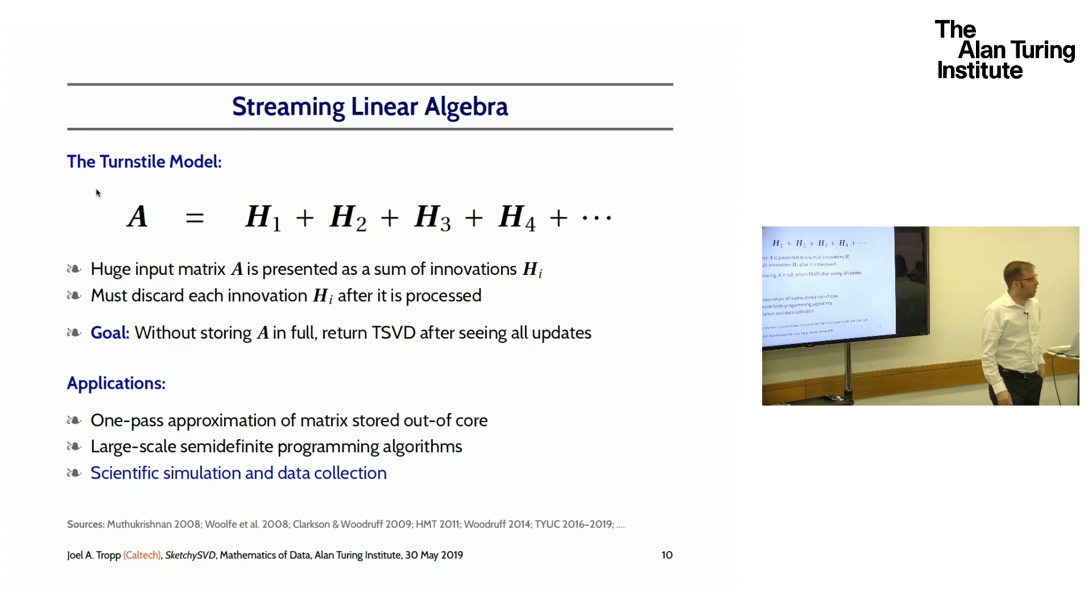Let me tell you about the problem I'm interested in, which is a little bit different from some previous settings. We're going to be interested in what's called the turnstile model. We're going to think of the matrix A as being presented to us as a sum of linear updates H_i. You should think about each one of these innovations H_i as being a very simple matrix: sparse, low rank, or otherwise very structured. A is given to us as a sequence of sums of these matrices. Because the matrix A is very big and potentially this data stream is very long, we're going to have to throw out the innovations after we process them. They go past us, we get to look, and then the innovation's gone.